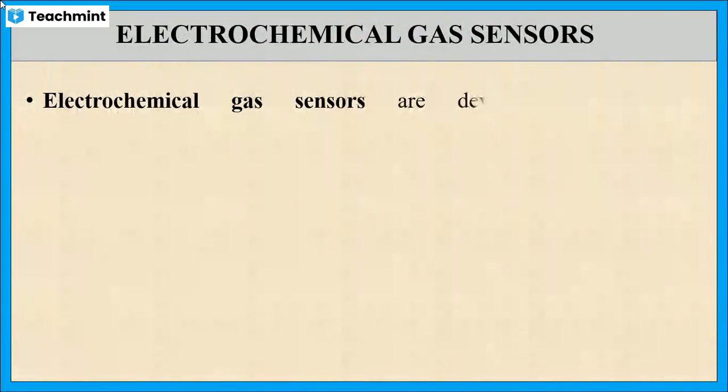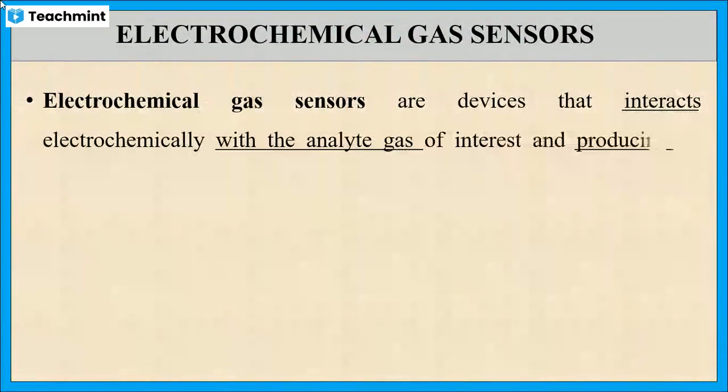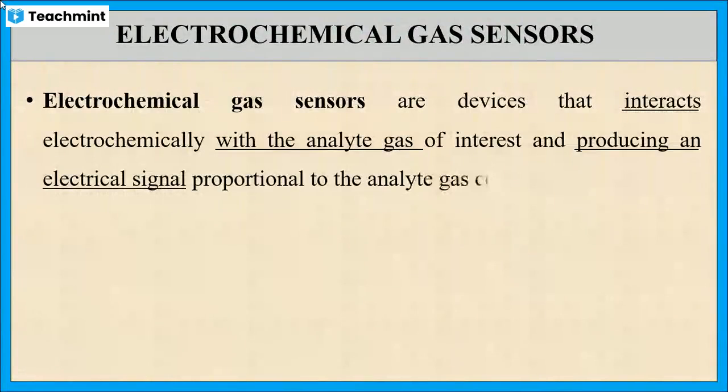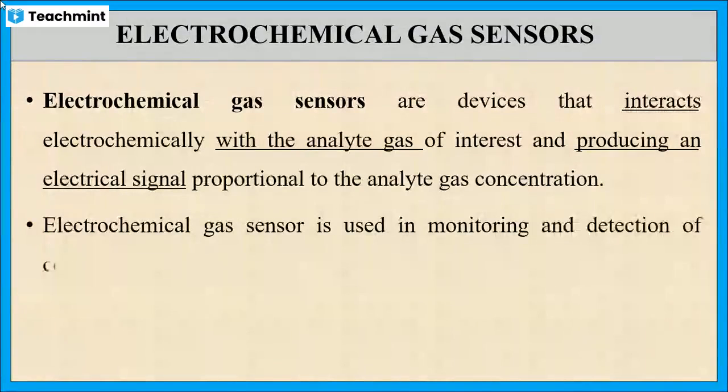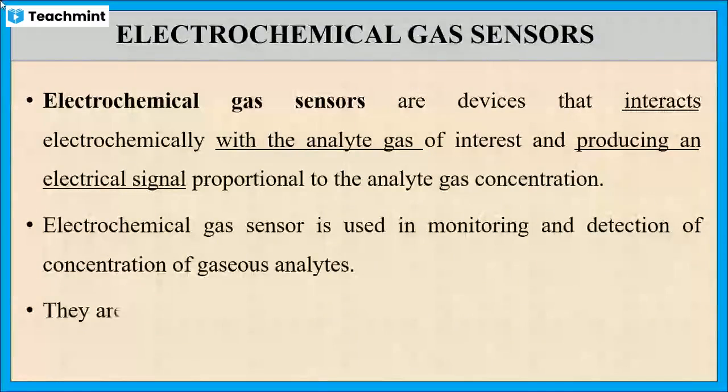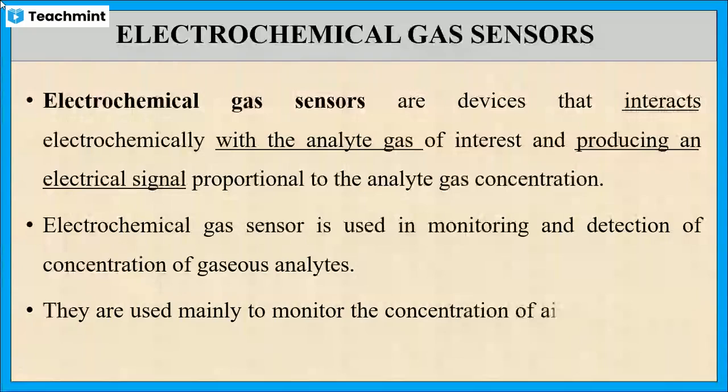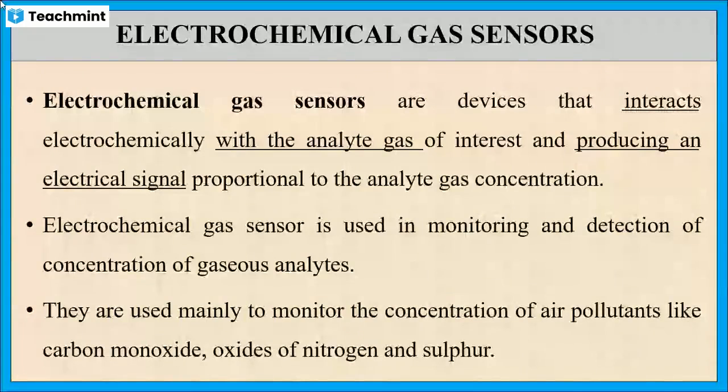These are devices that interact with the analyte gas electrochemically and produce an electrical signal which is proportional to the concentration of analyte gas. This type of sensors are used for the detection of various gases mainly to detect air pollutants like carbon monoxide, nitrogen oxide, nitrogen dioxide and sulfur dioxide.